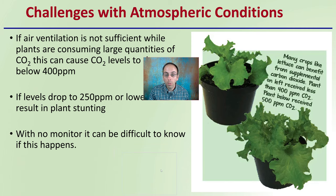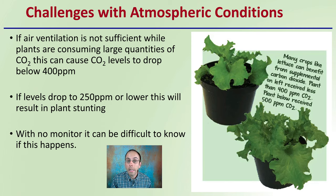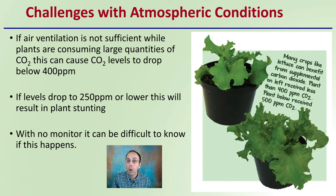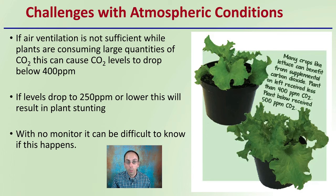There are some challenges with atmospheric conditions. If air ventilation is not sufficient while plants are consuming large quantities of carbon dioxide, this can cause those carbon dioxide levels to drop below atmospheric conditions, which is around 400 parts per million. If levels drop below 250 parts per million or lower, this will actually result in plant stunting. With no monitoring, it can be difficult to know if this happens, so it's important to constantly keep air moving around.